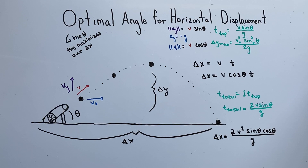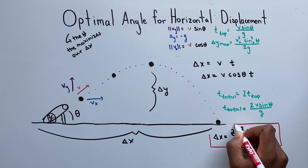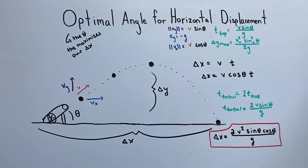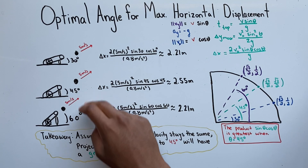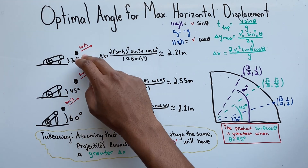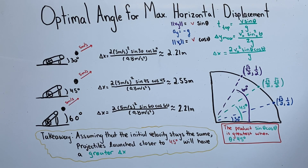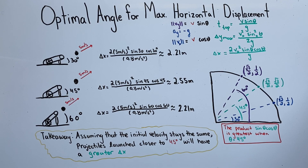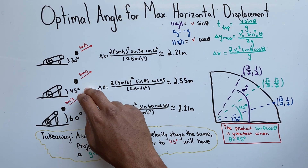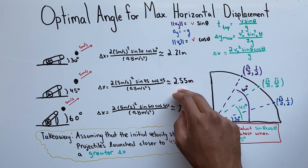We now have a formula relating horizontal displacement to launch angle. In our example, three cannons are launched with the same initial velocity at three different angles. The cannonball launched at 45 degrees has the greatest horizontal displacement.